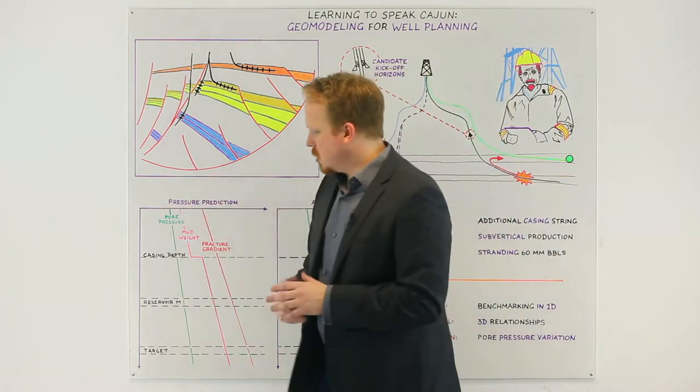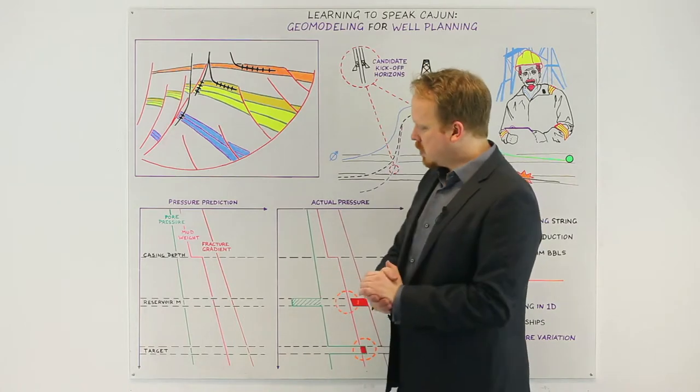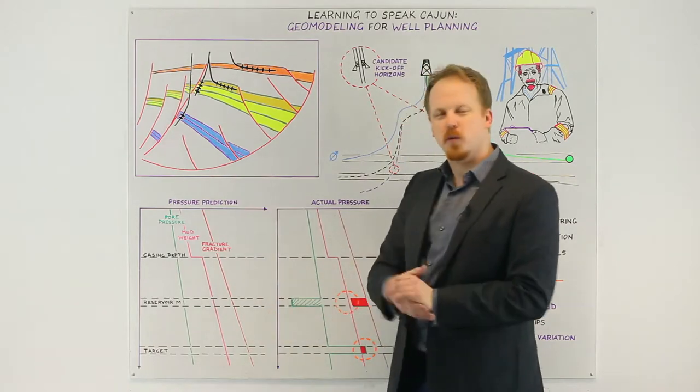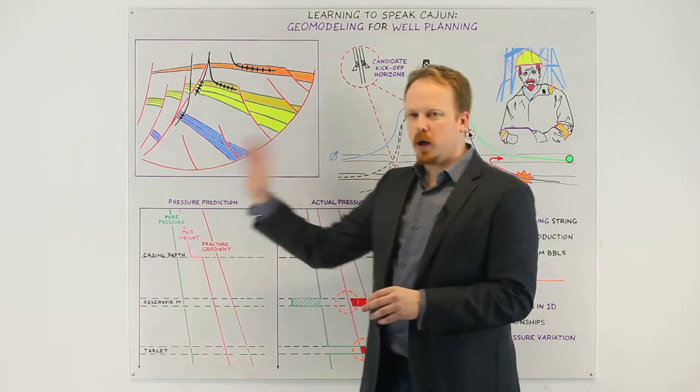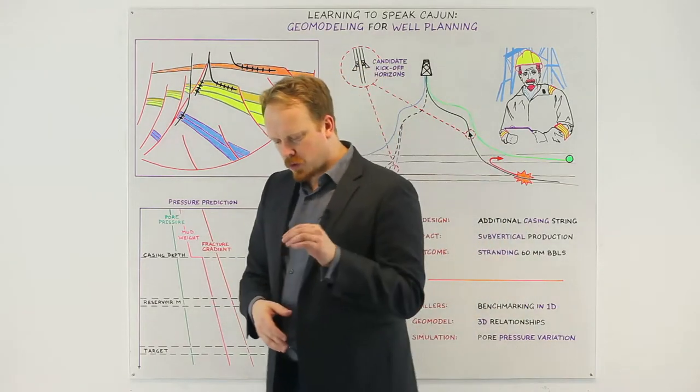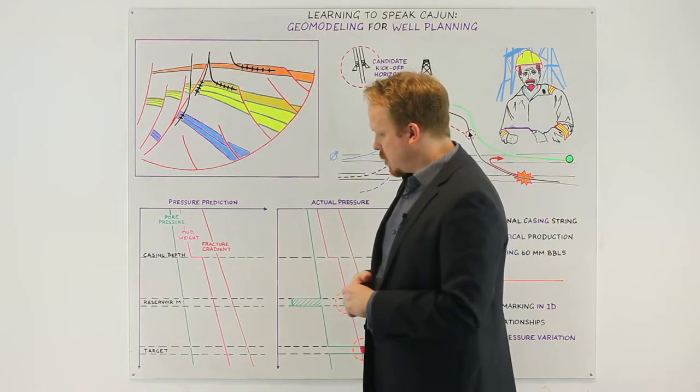So in the pre-drilled pressure prediction we essentially said that the pore pressure was going to be relatively consistent across the field. The fracture gradient would therefore be also pretty similar and our mud weight window required only one casing depth and we would drill through both the shallower unit and the target reservoir with the same open hole section.